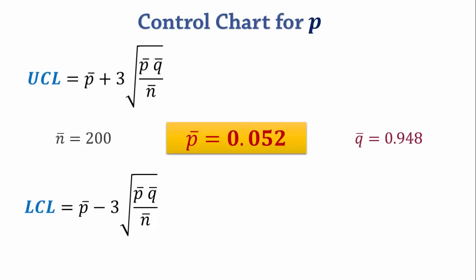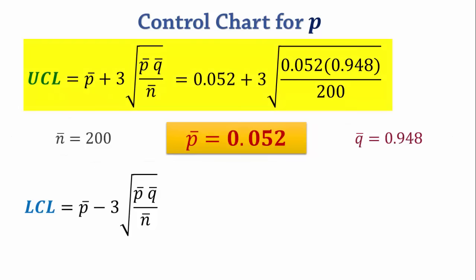So, plugging the values into the UCL formula, we have 0.099, and for LCL, we have 0.005.